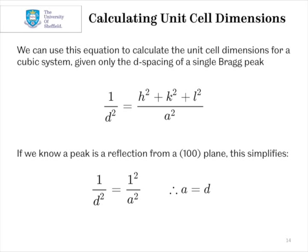And there are also shortcuts, obviously, if we know that a peak is a reflection from the (100) plane. 1/d² = 1²/a² simplifies to give us a = d.